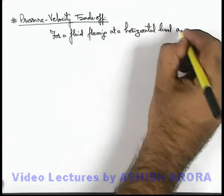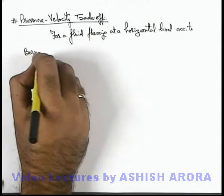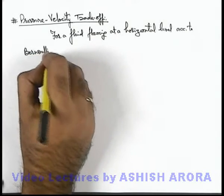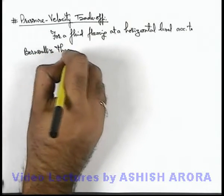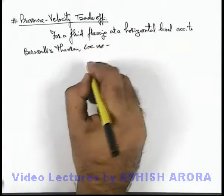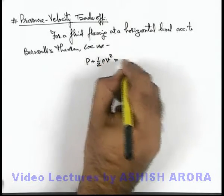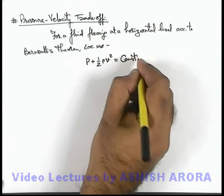according to Bernoulli's theorem we use pressure plus half rho v square as a constant at all points.